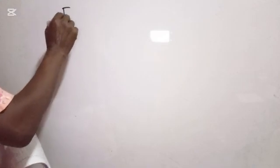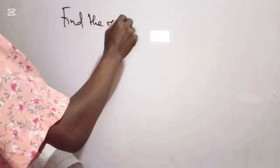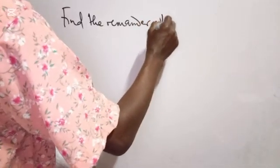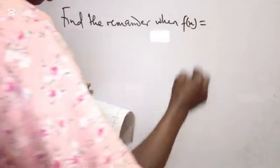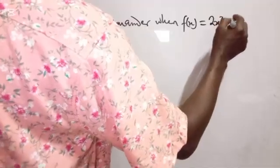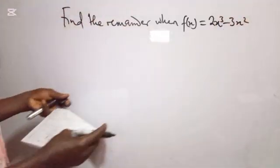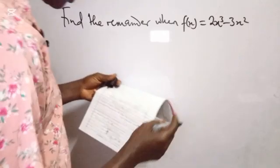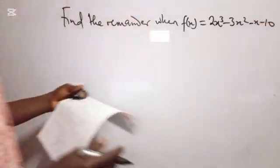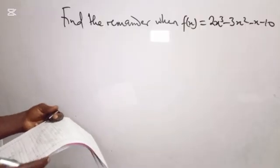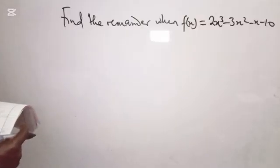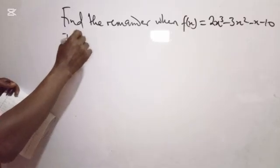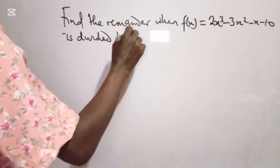In the next question, we want to find the remainder — this is the quickest approach. Find the remainder when f(x) equals 2x cubed minus 3x squared minus x minus 10 is divided by 2x plus 1.